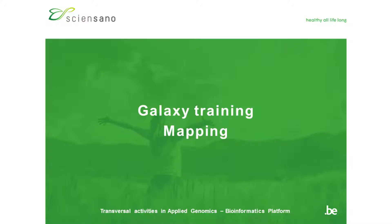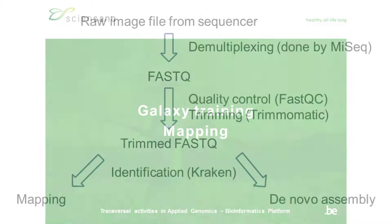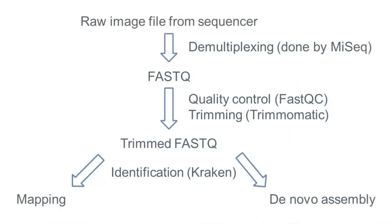After having gone through the complete quality control and assembly in other videos, we will see another branch of our workflow in this video, and that is how mapping can be done in Galaxy. But before we start with the mapping itself, it is important to go over some definitions, as you will find that these terms are being used interchangeably, but it is important to know what the correct meaning is.